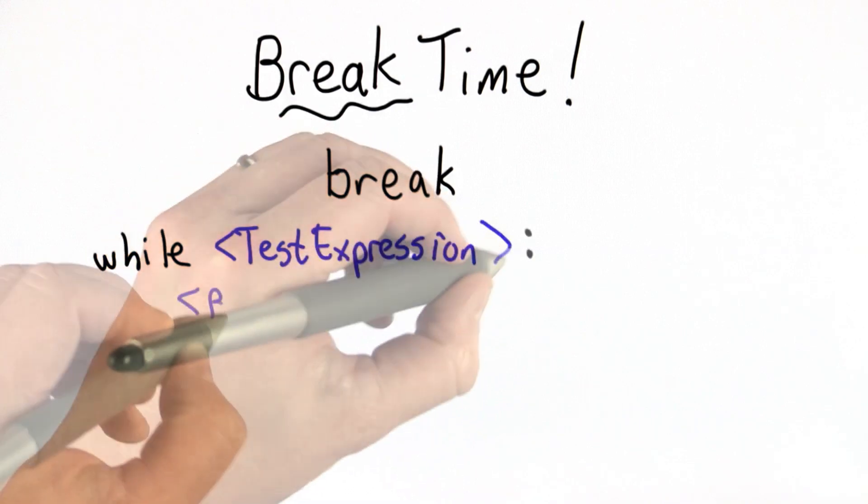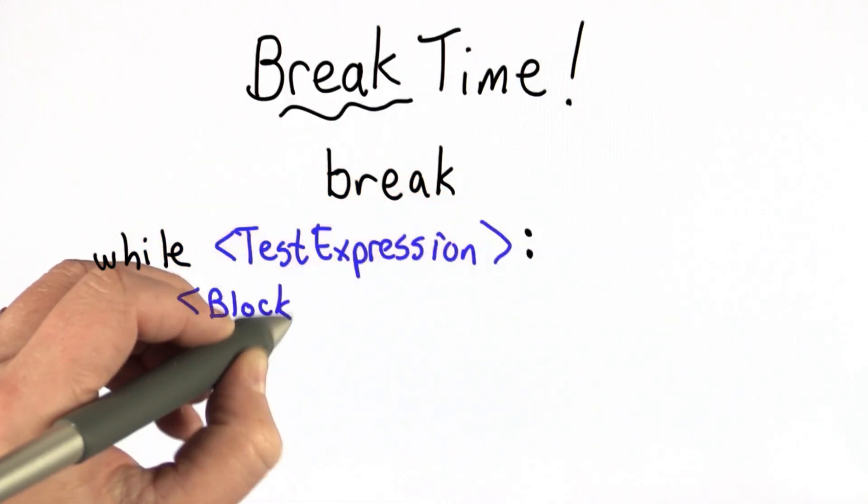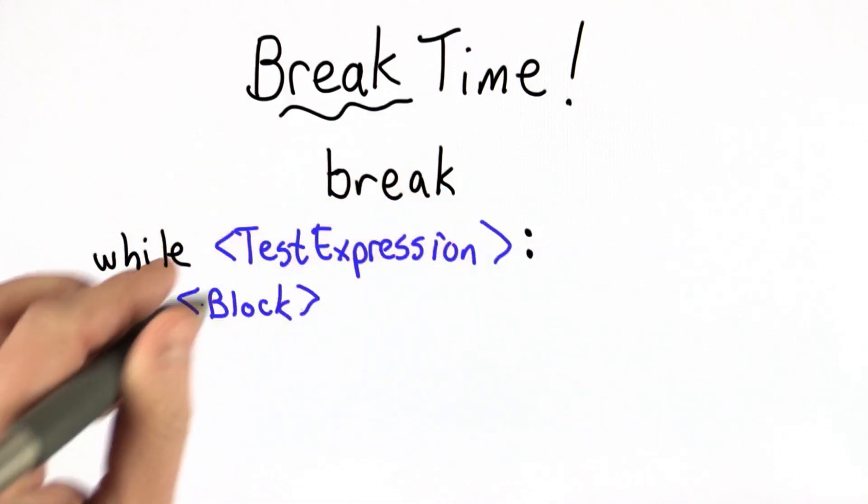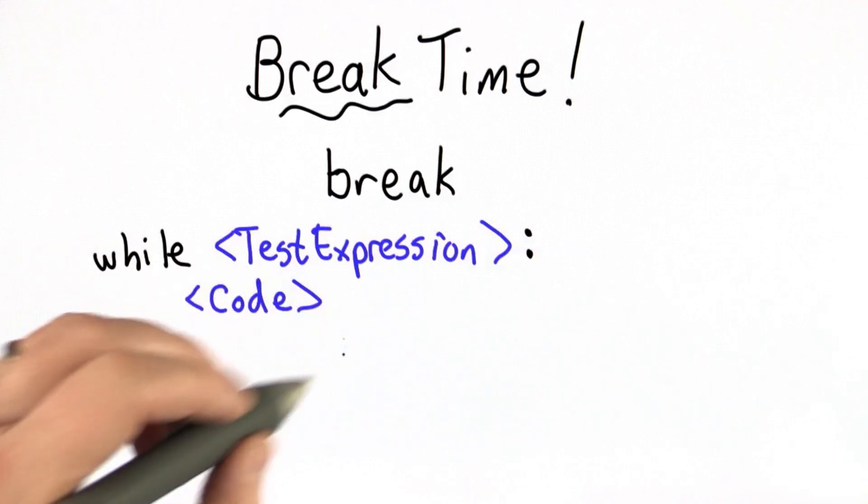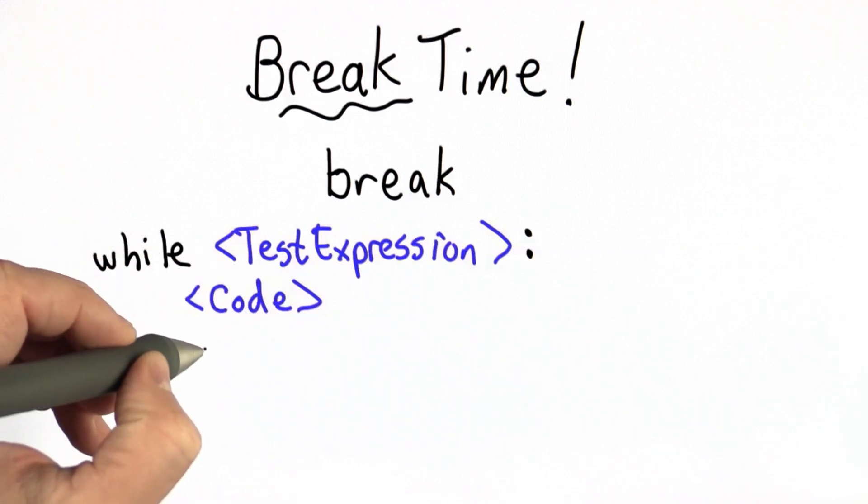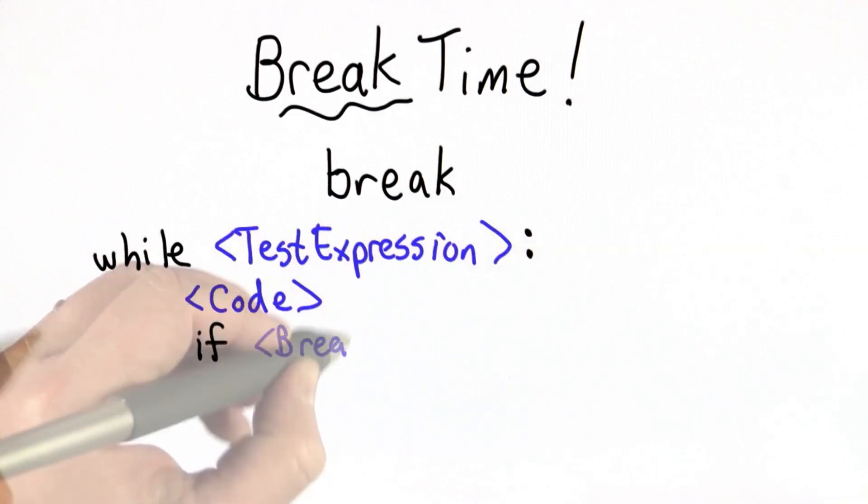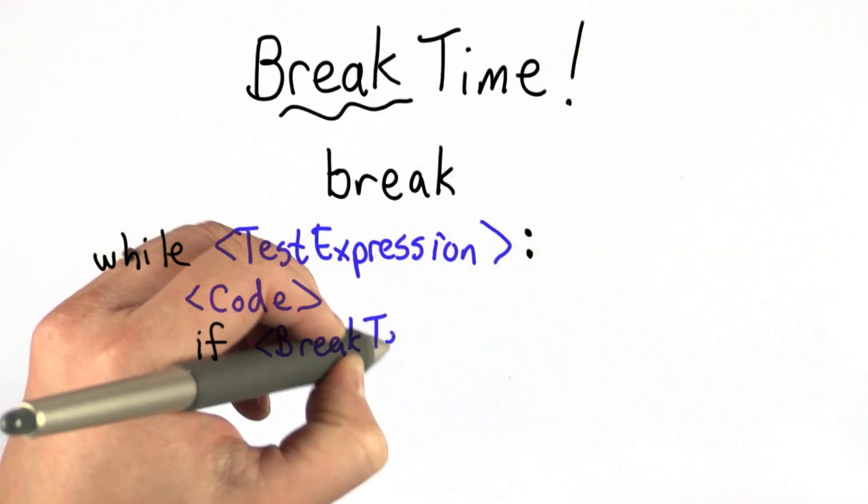Our general while structure is we had a block here. Now we're going to look inside this block to see the kinds of things that could be here. This is just an example of what might be in the block. We have some code, some Python statements, then we have an if statement, and that's going to have another test expression.